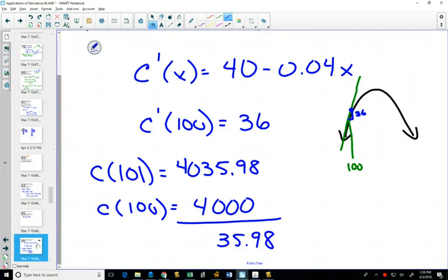Now to get these values, I had to plug 101 into that equation, calculate it. I had to plug 100 into that equation, calculate it. And I had to subtract the two. It wasn't a lot of work. But by finding the derivative, I just had to plug 100 in once. And I got 36. It's a really good estimate. It's not perfect, 0.02 off. But it's an estimate.